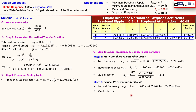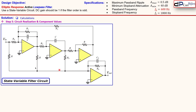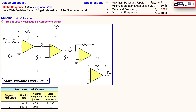We are now ready for circuit realization and component values — step five. The state variable circuit uses four op-amps and several resistors. The RC low pass filter is formed by capacitor C6 and resistor R6. Summarizing the denormalized values: stage one has Q1 = 1.844 and stage two has Q2 = 0.5. The zero frequency of the passive RC low pass filter is at infinity.